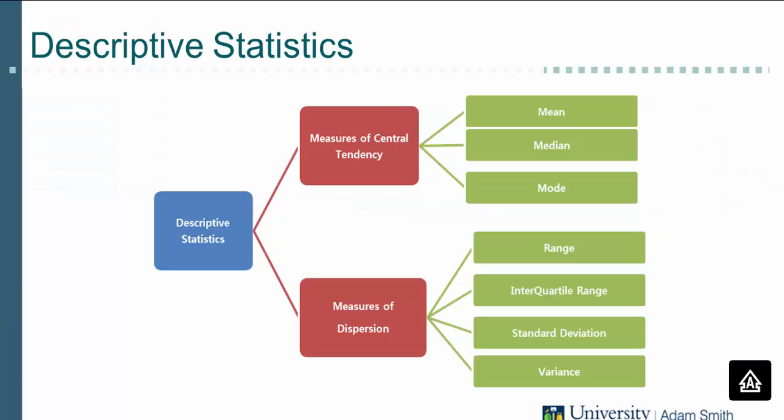Descriptive statistics provides summary information for your sample. There are two types of descriptive measures: measures of central tendency and measures of dispersion. The measures of central tendency include mean, median, and mode.